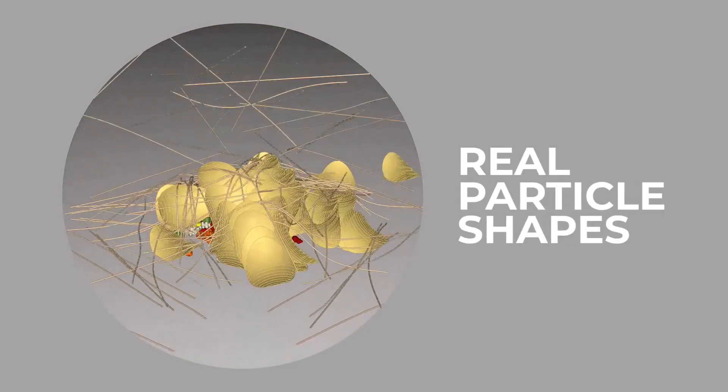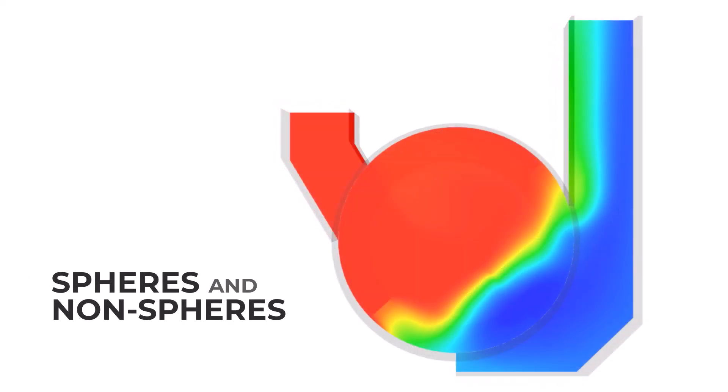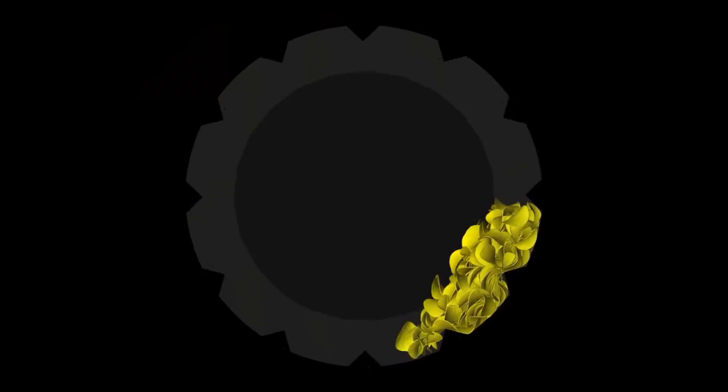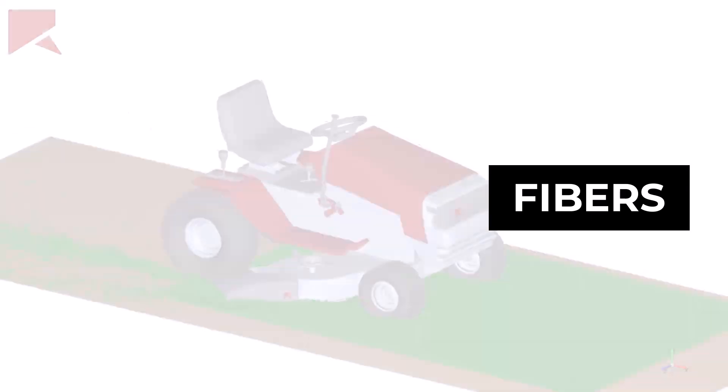ANSYS Rocky enables you to simulate a system with real particle shapes and size distribution, both spherical and non-spherical particle shapes, including shells and fibers of any length.